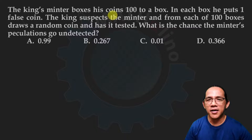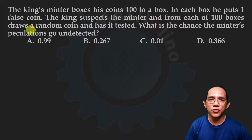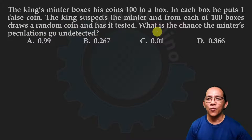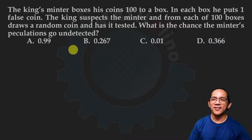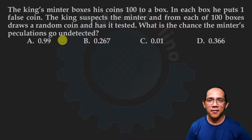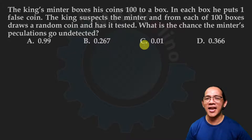The king's minter boxes his coins, 100 to a box. In each box he puts one false coin. The king suspects the minter and from each of 100 boxes draws a random coin and has it tested. What is the chance the minter's speculations go undetected? So the question is: what is the probability that his misappropriation of the king's coins goes undetected?